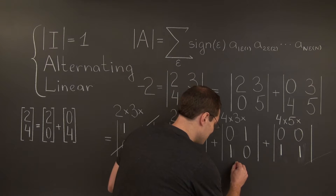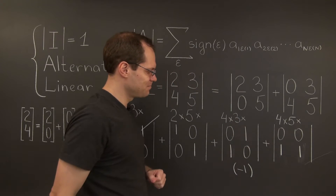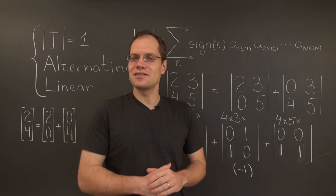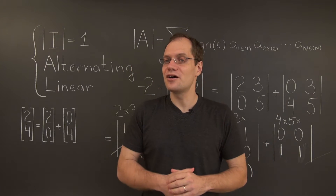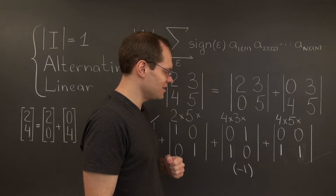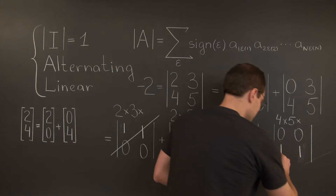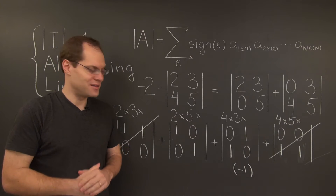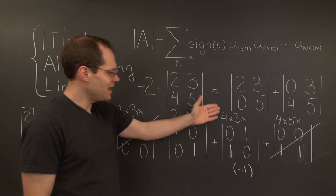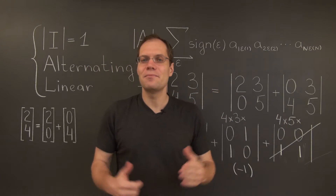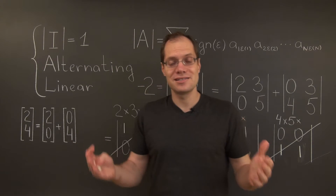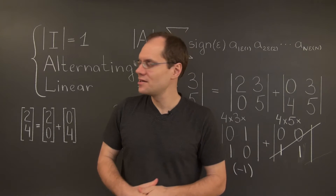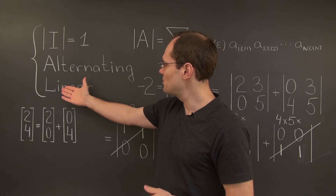So we'll put minus one in parentheses here. Moving on to the last determinant: we have two identical columns, and therefore, by the alternating property, this determinant is also zero. So we cross it out, and we're left with 2 times 5 minus 4 times 3 equals minus 2.